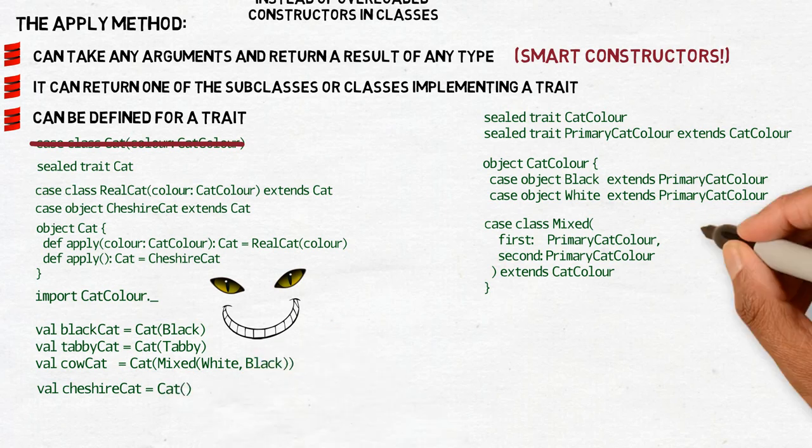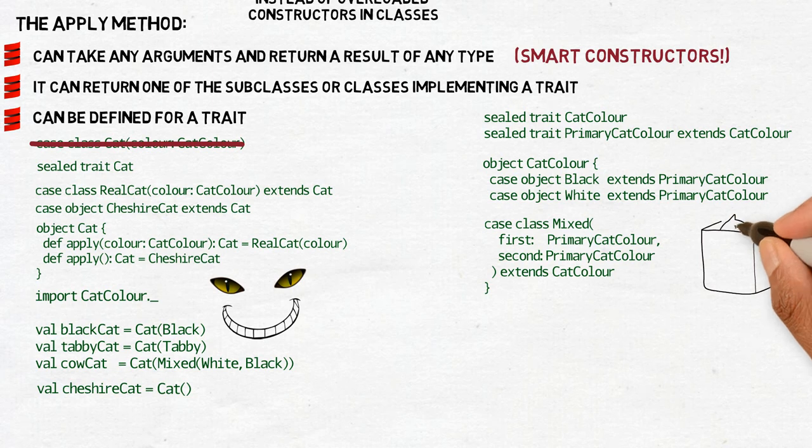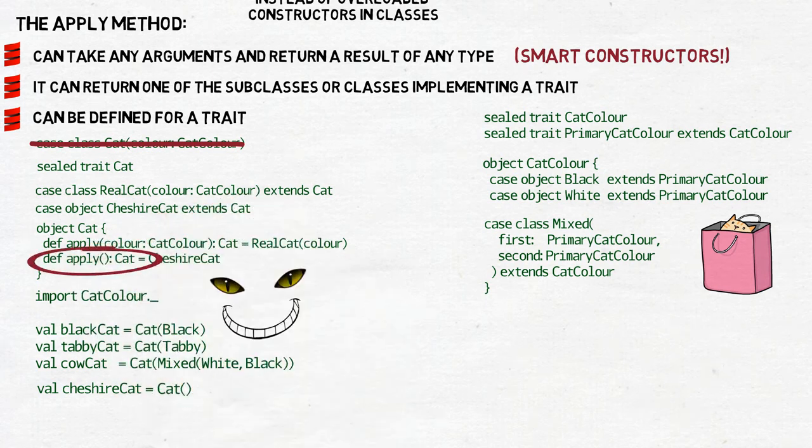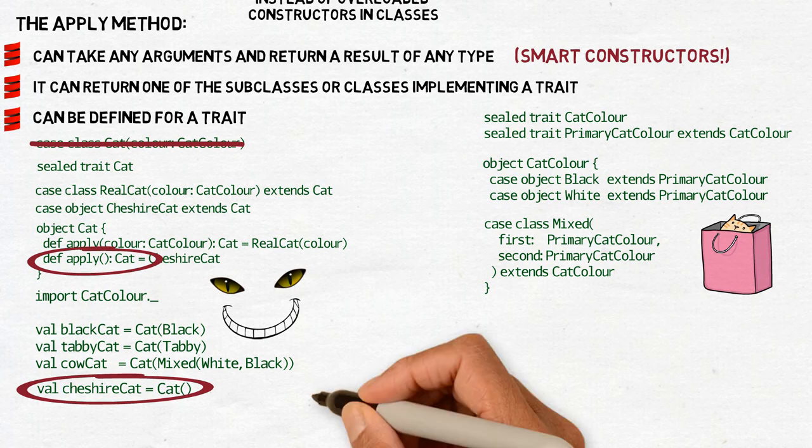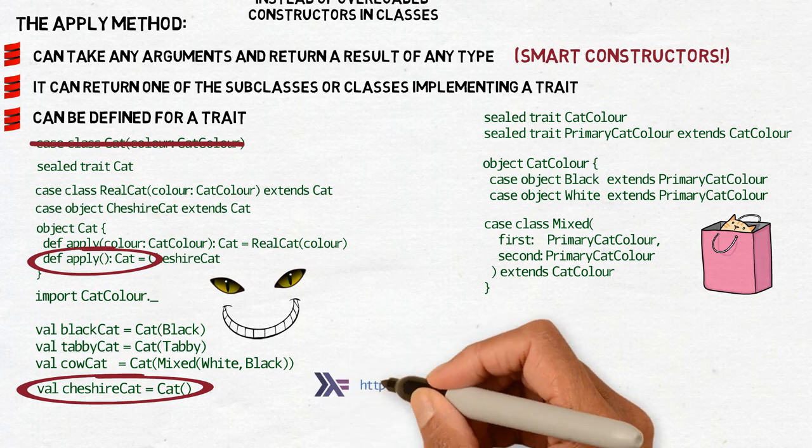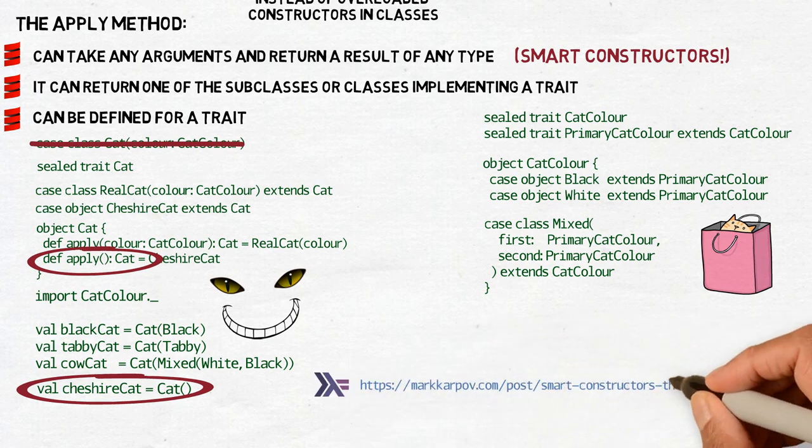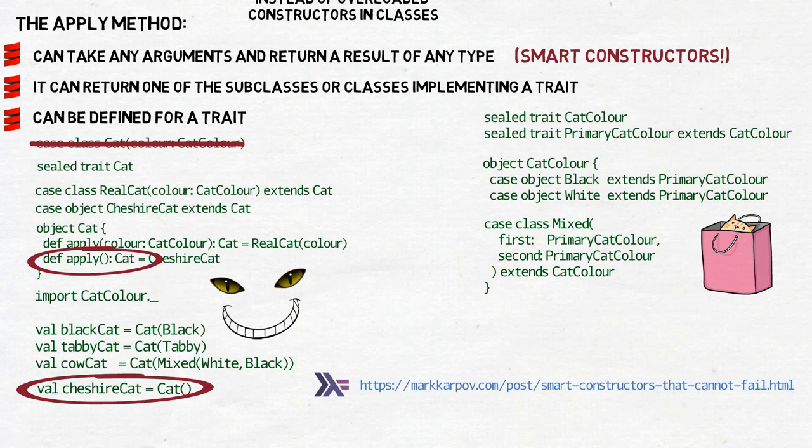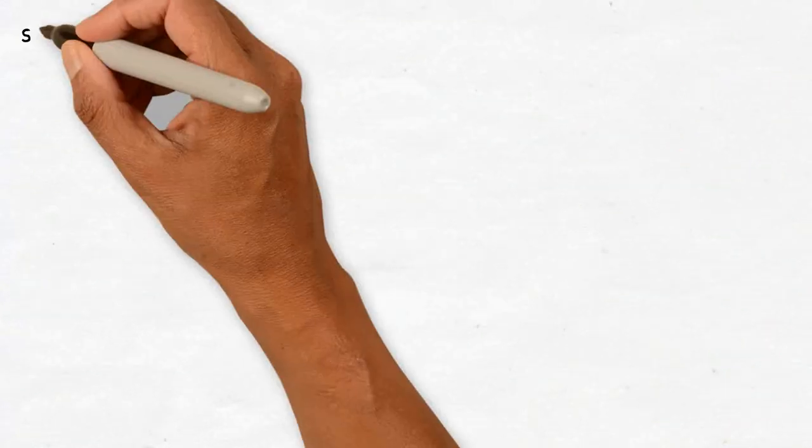From the point of view of the user of your code, almost nothing changed. It's almost as if cat were still a case class. The only difference is that now, somehow, you can call the cat apply method without arguments, and it will produce Cheshire cat, which for all practical reasons can still be treated as a regular cat, unless we really need to look underneath. By the way, if you are interested in how smart constructors are used in Haskell, please take a look at this article by Mark Karpov.